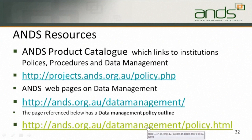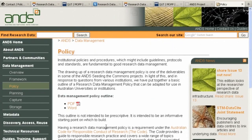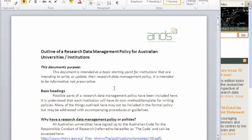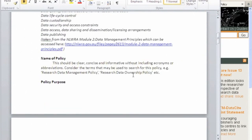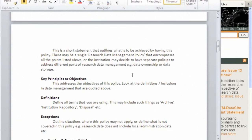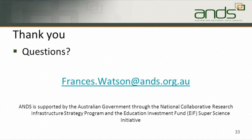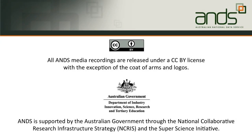ANS resources: we have the product catalogue, we have the ANS webpages on data management which are comprehensive, and we have an outline of a research data management policy. You have to use your own university's templates but you could read through this and see the sorts of statements and the sorts of things that you might be able to apply when drafting your policy. ANS also has me as a resource and I'm always happy to talk to people, exchange emails or support. I recognise that this is a pretty fast going over what is really quite a complex area and I'm more than happy to help, so you can contact me at any time. Thank you.